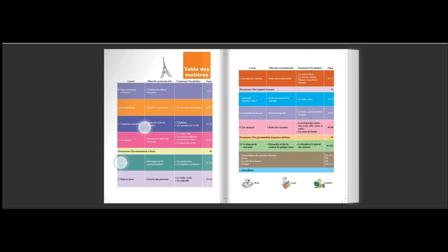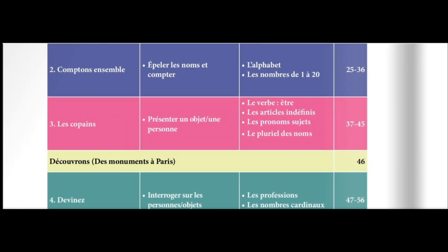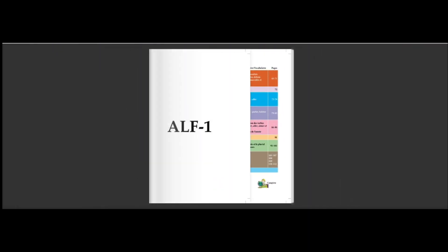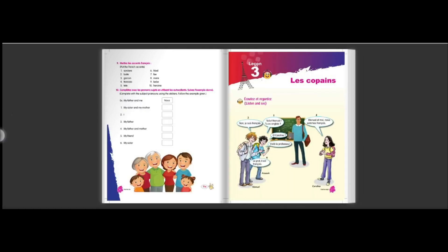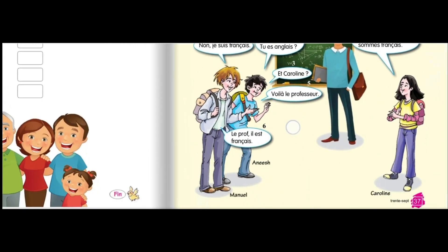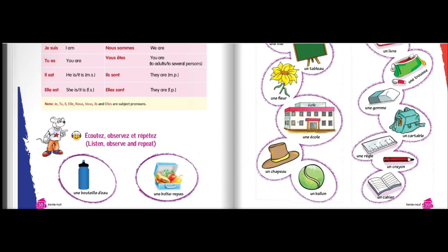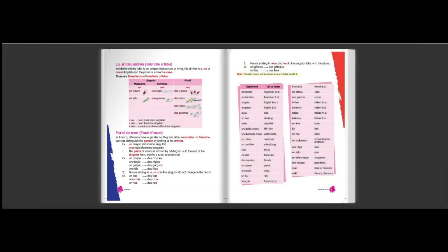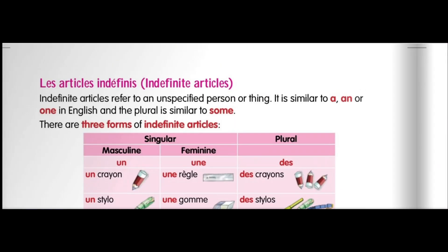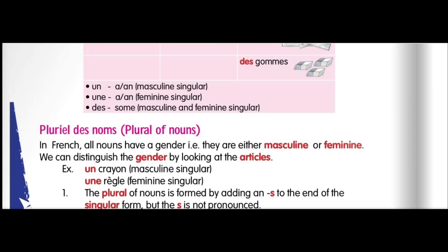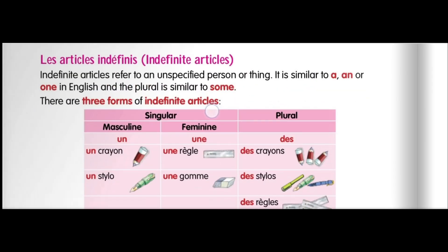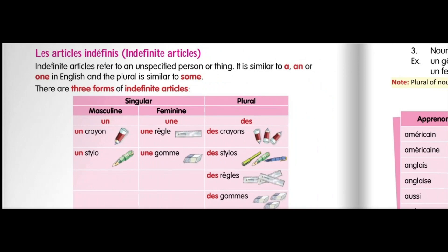Hello everyone, I'm Sniti, your French educator from Master French with Sniti. Today we are going to continue with the third part of lesson number three, that is 'les copains', from the Opera Noel process part one book published by Saraswati House. We have completed the conversation between Anish, Manuel and Caroline, learned about verbs, and covered indefinite articles. Today we will learn indefinite articles in depth and then see how to convert nouns into plural form.